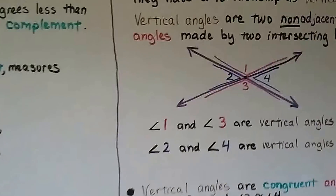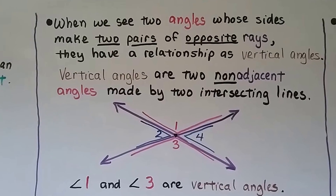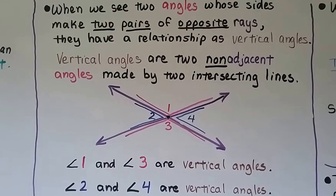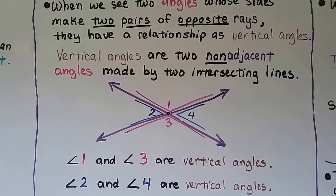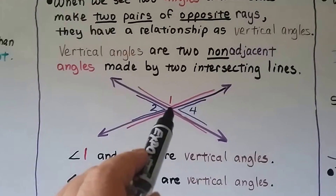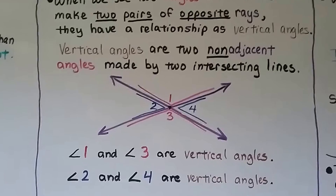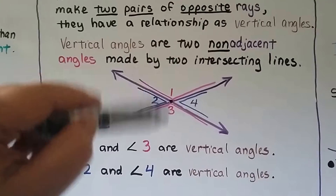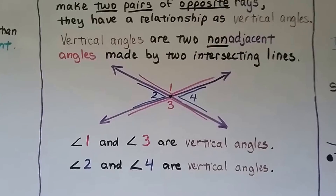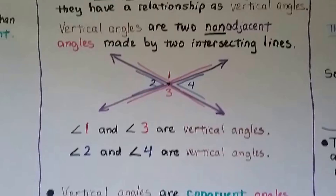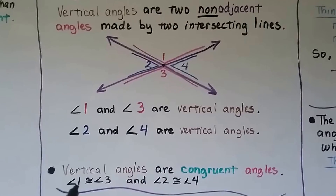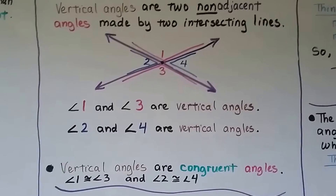When two angles' sides form two pairs of opposite rays, they are vertical angles. Vertical angles are two non-adjacent angles made by two intersecting lines. In the diagram, two lines intersect: angle 1 and angle 3 are vertical angles — across from each other — and angle 2 and angle 4 are vertical angles. Vertical angles are congruent, so angle 1 is congruent to angle 3, and angle 2 is congruent to angle 4.